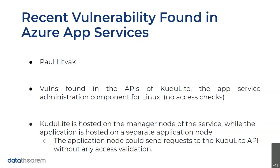The researcher who found this is named Paul Litvak. The way that Kudu Light works is that it's hosted on the manager node of the service, and the application is hosted on a separate node. What happened was that the application node could send requests to the Kudu API, effectively accessing that manager node — which has all the controls and permissions — without having access validation. So there was no authorization or authentication turned on in this situation, which is what created the vulnerability that allowed the attack to succeed.